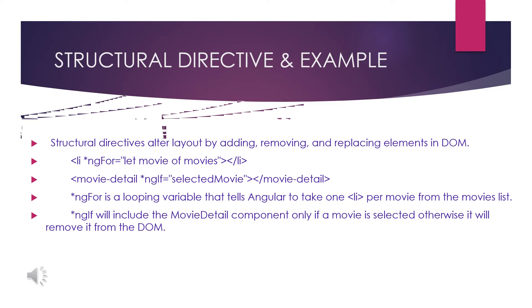For the first example, we write: `li *ngFor="let movie of movies"` — this prints a list. Here 'movies' is a collection containing many movie objects. The variable 'movie' takes each element of the collection one by one — one, two, three — and prints them. So 'movies' is the collection stored in a data structure, and 'movie' is the object iterating through it one by one.